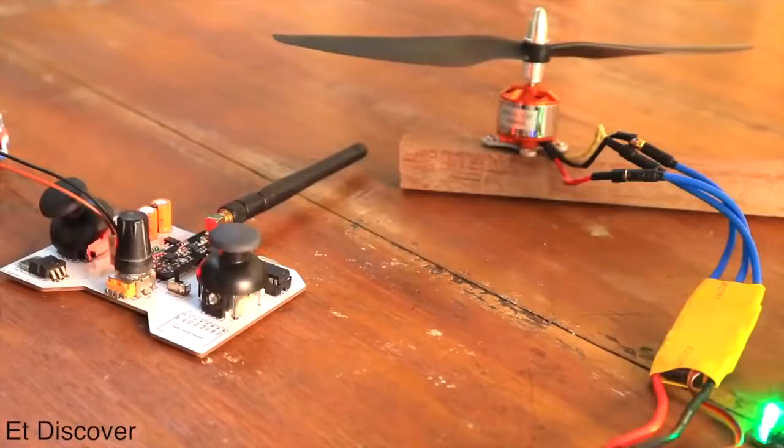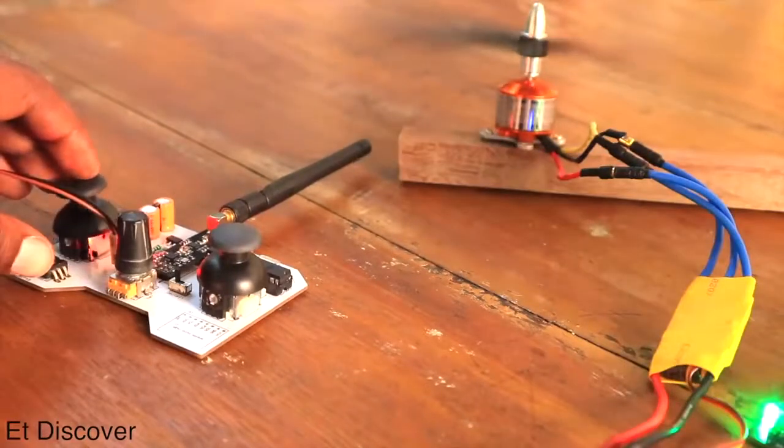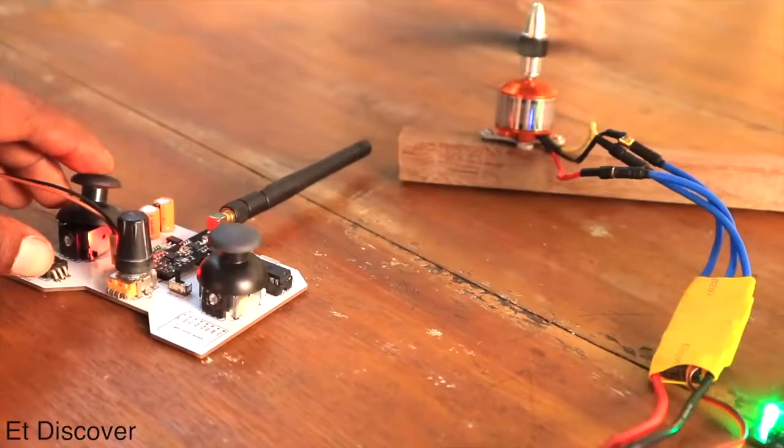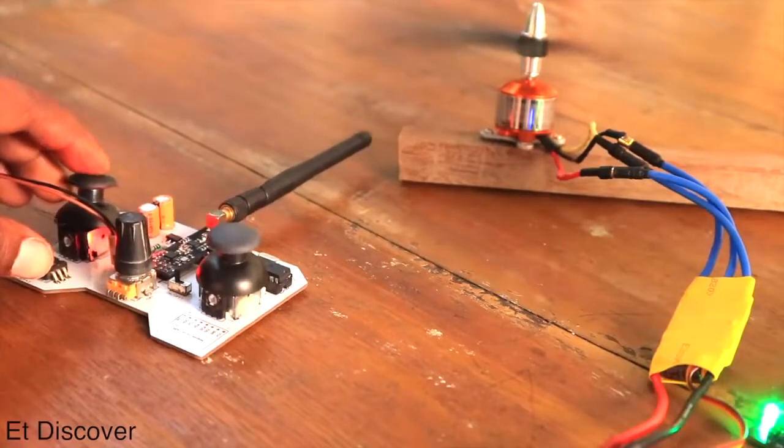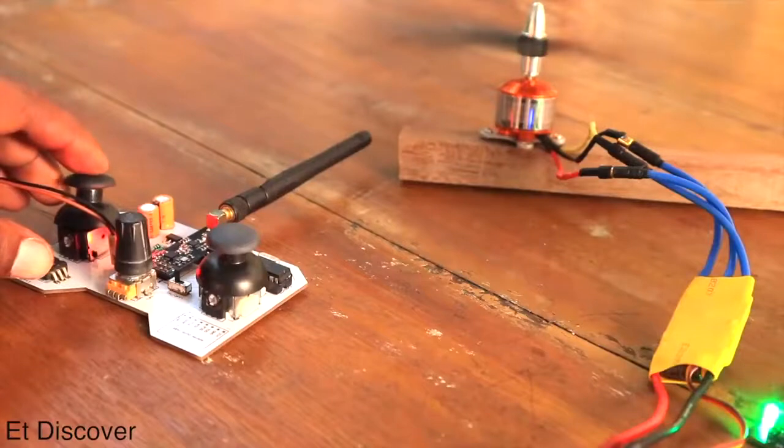The motor gets ready by notifying me with its beeping sound. It gives me butterflies when I hear that sound. When I push the joystick forward, the motor starts ready. If I push it full, the motor is rotating at its full speed. That means my transmitter and receiver are working properly.